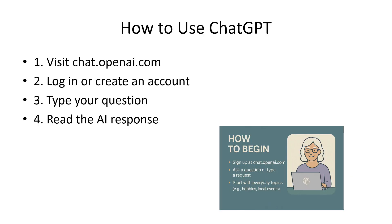How to use ChatGPT. Just go to the website, sign in, and type your message like you would in an email or a text — it's that simple. You visit chat.openai.com, log in or create an account, type your question, and read the AI response. Simple as that.